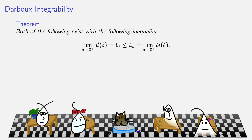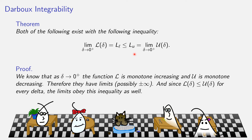Both of the following limits exist. Whatever the limit as delta approaches 0 of L of delta is, we'll call it L sub L — the limit of the lower sums. Whatever the limit as delta approaches 0 from above of U of delta is, we'll call it L sub U — the limit of the upper sums. As delta decreases towards 0, the lower sum infimum is monotone increasing and the upper sum supremum is monotone decreasing. Monotone functions have limits. Therefore these limits exist, possibly as plus or minus infinity.